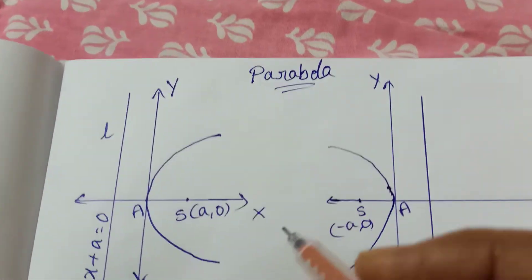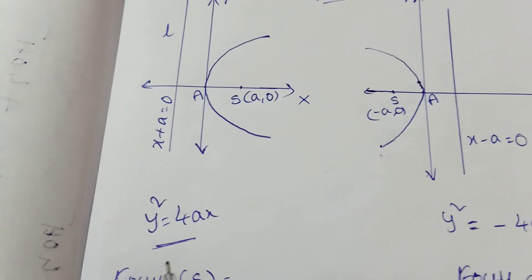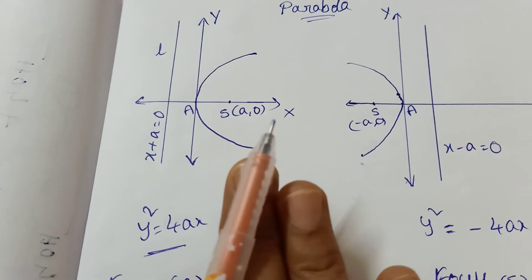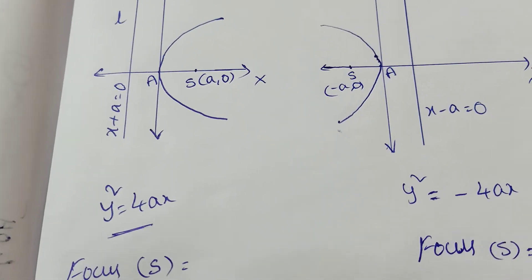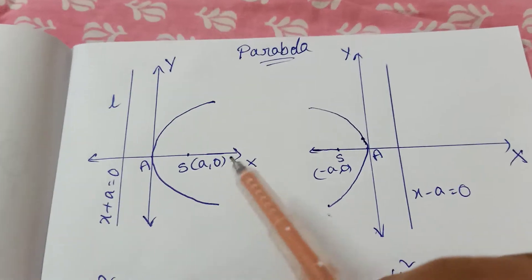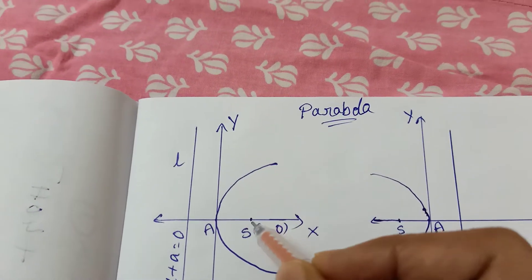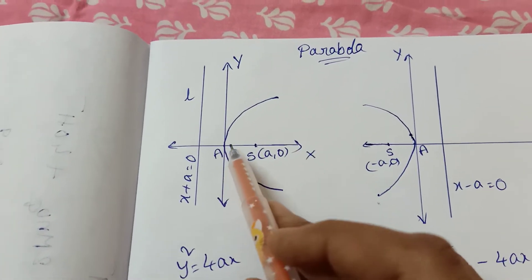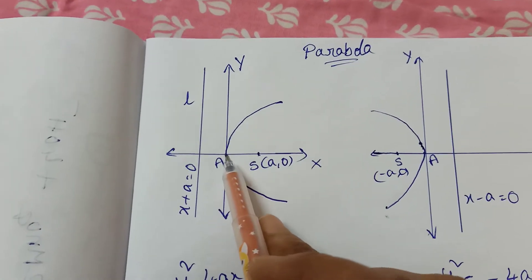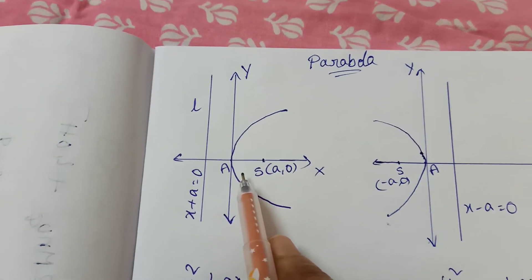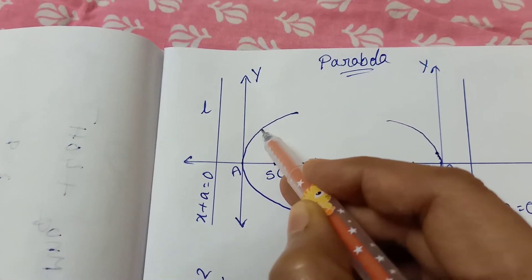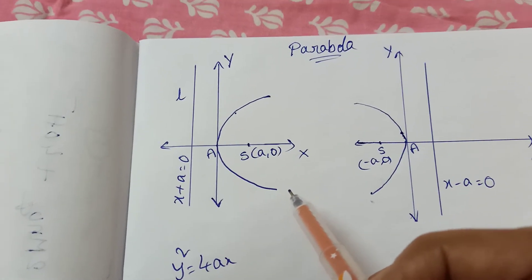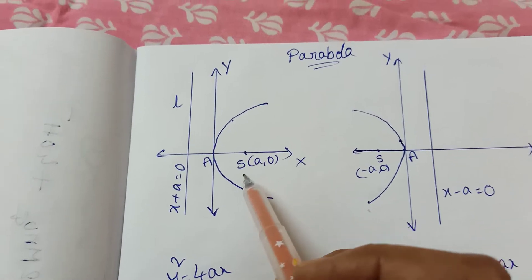The general formula is y squared equal to 4ax. In this video, we will discuss how the curve y squared equal to 4ax looks, including focus, vertex, equation of the directrix, and example questions. This equation passes through the origin. The curve lies on the x-axis. Here SP is equal to Bm.